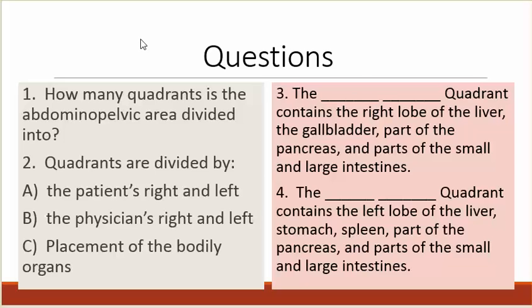Number one: how many quadrants is the abdominal pelvic area divided into? Number two: quadrants are divided by A, the patient's right and left; B, the physician's right and left; C, placement of the bodily organs. Number three: the blank, blank quadrant contains the right lobe of the liver, the gallbladder, part of the pancreas, and parts of the small and large intestines. Number four: the blank, blank quadrant contains the left lobe of the liver, stomach, spleen, part of the pancreas, and parts of the small and large intestines.